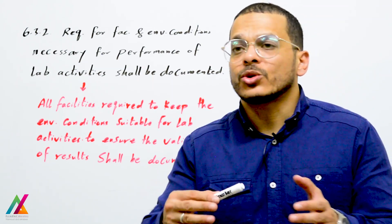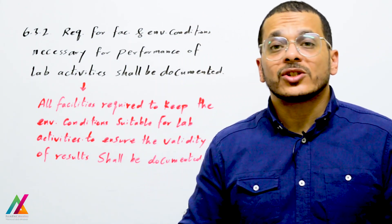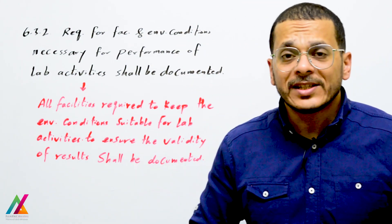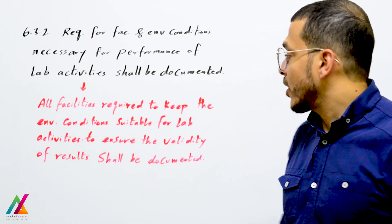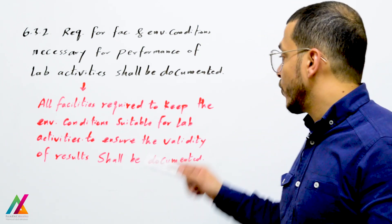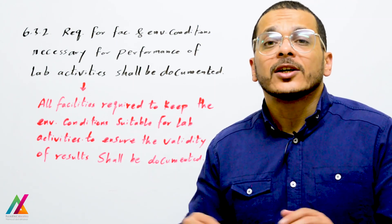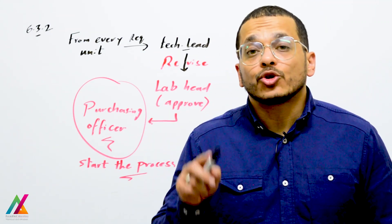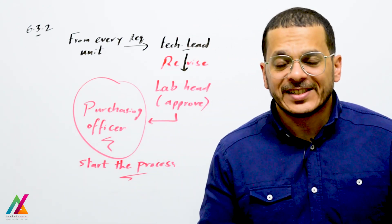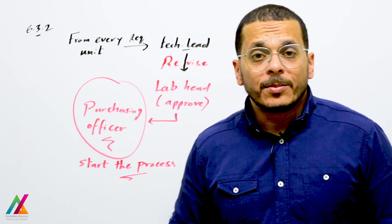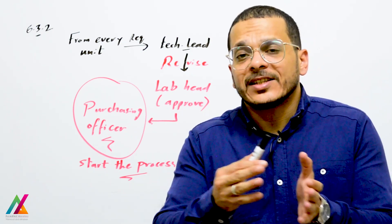Equipment such as thermometers or data loggers required to keep environmental conditions suitable shall be documented. All facilities required to keep environmental conditions suitable for lab activities and to ensure the validity of results shall be documented. There is a process inside the lab that should be followed to obtain these requirements. First, every unit inside the lab shall prepare a list of requirements for facilities or equipment.